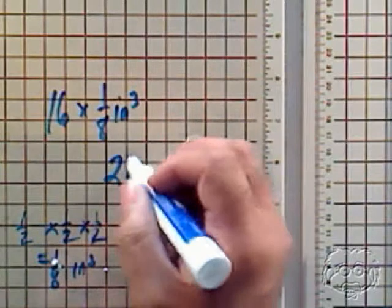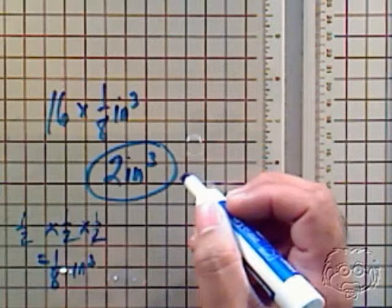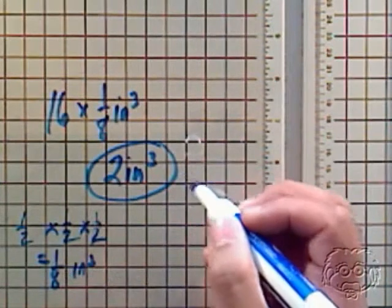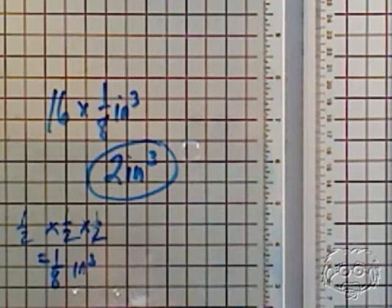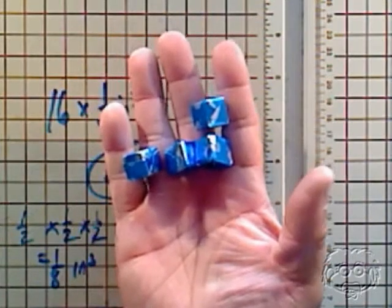...then the volume of that harmonica case is 2 inches cubed all together, approximately. So you can use something as simple as bouillon cubes to determine the volume.